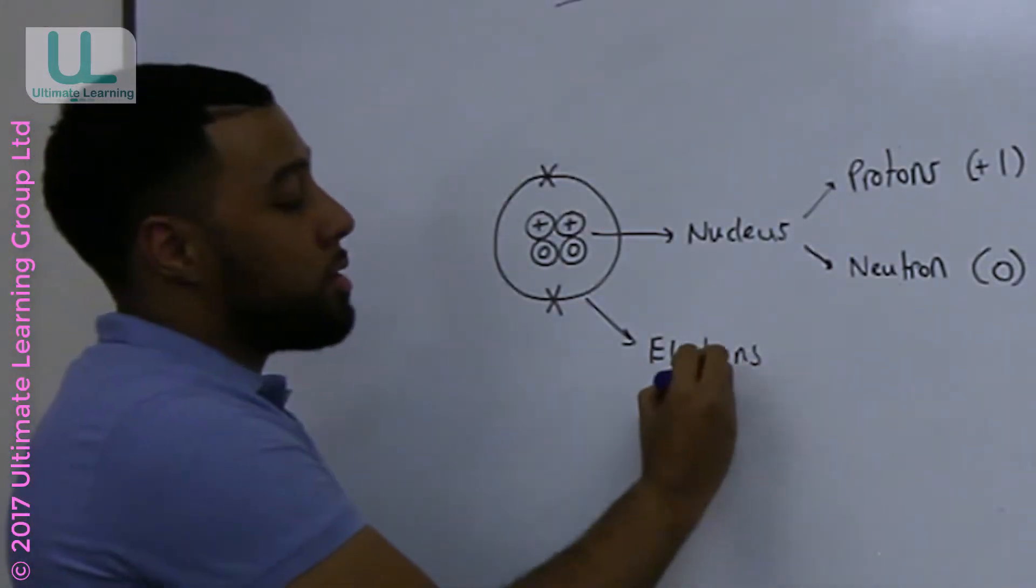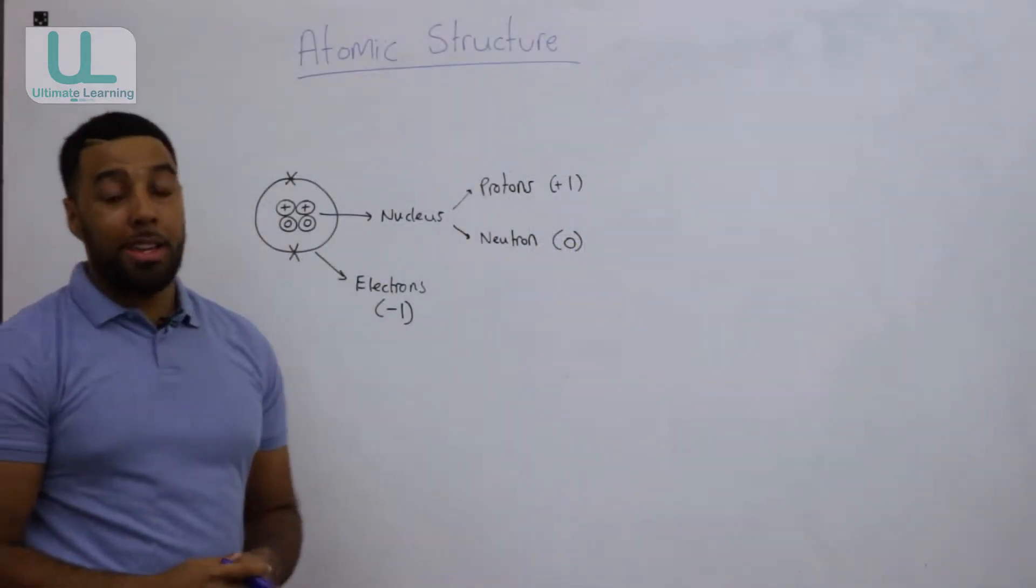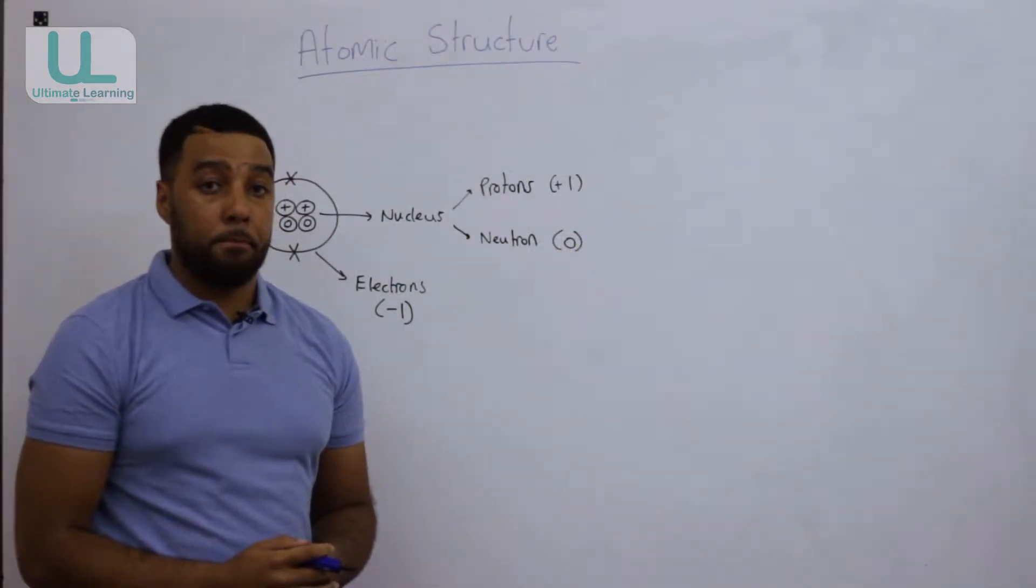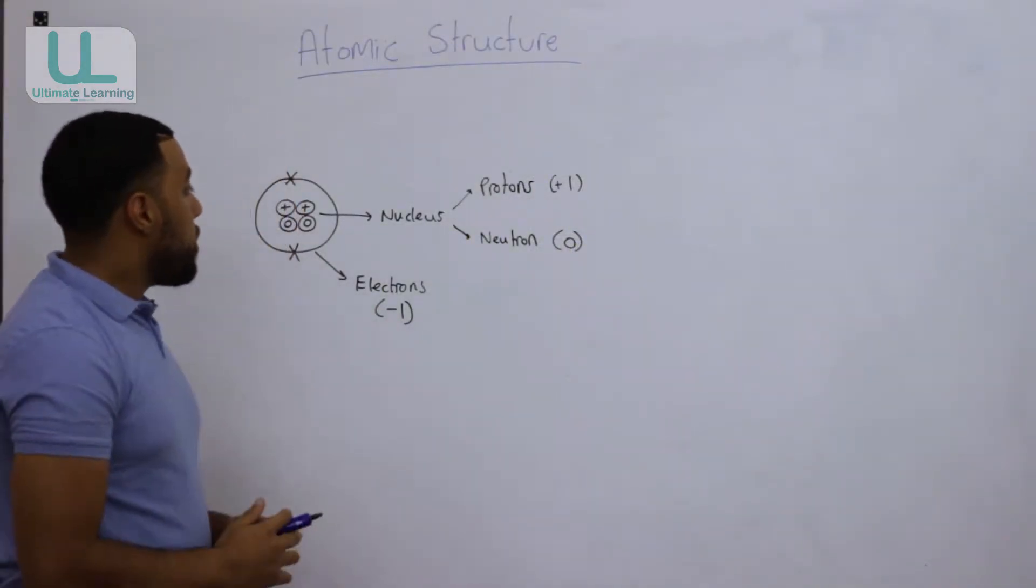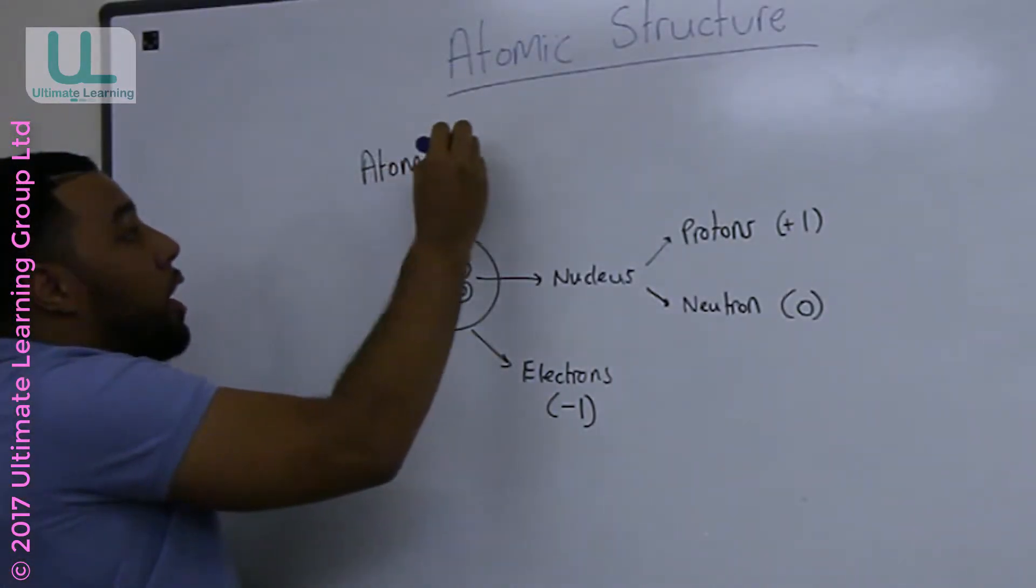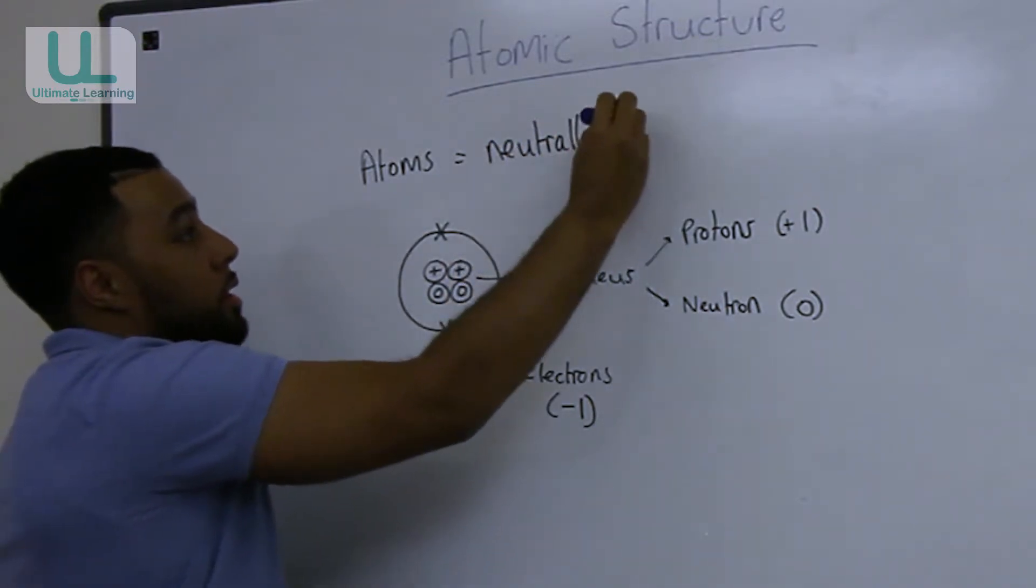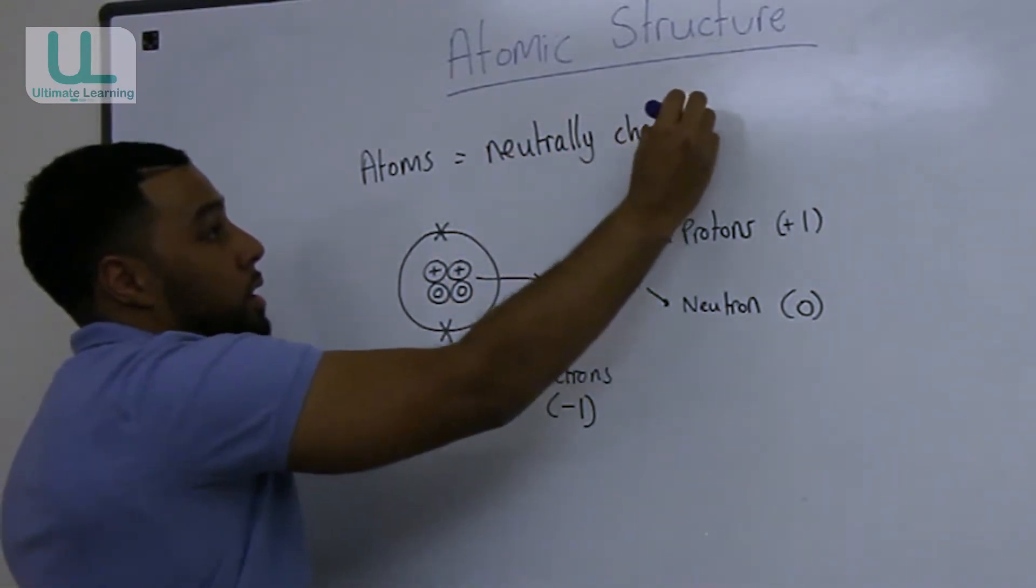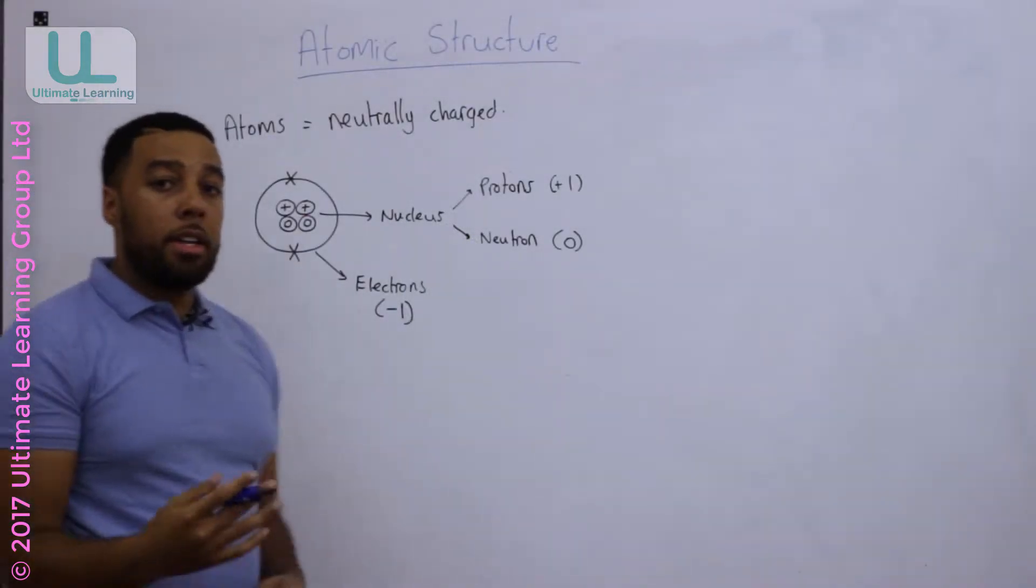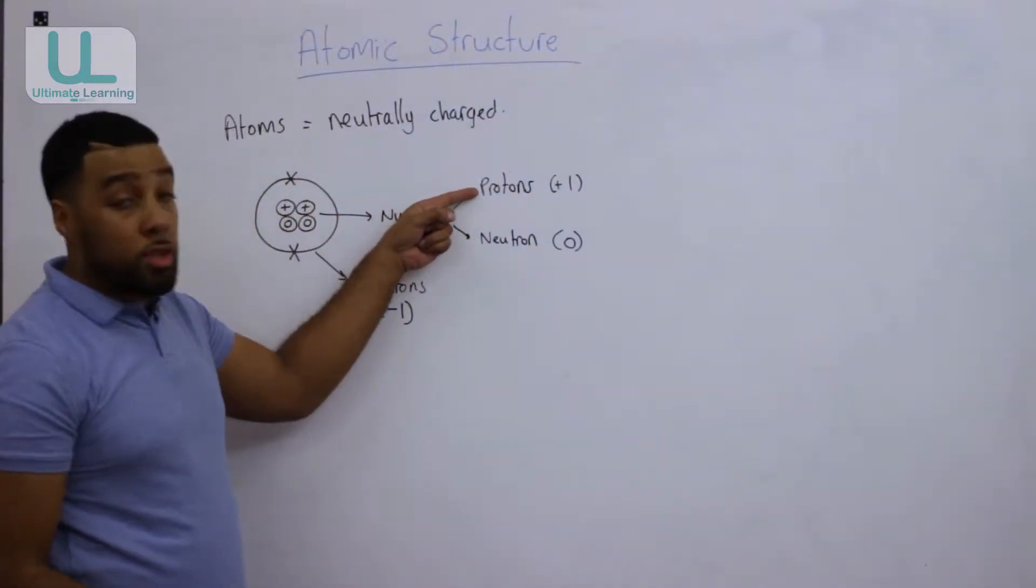The electrons that orbit the nucleus have a minus one charge. They're negatively charged. We must remember at all times that atoms are overall neutrally charged.